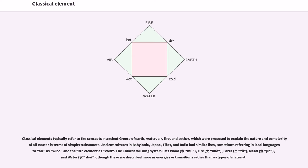Classical elements typically refer to the concepts in ancient Greece of earth, water, air, fire, and ether, which were proposed to explain the nature and complexity of all matter in terms of simpler substances.